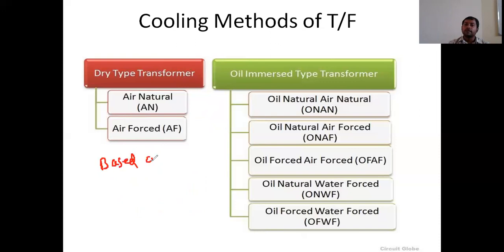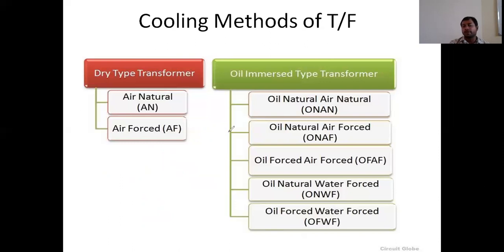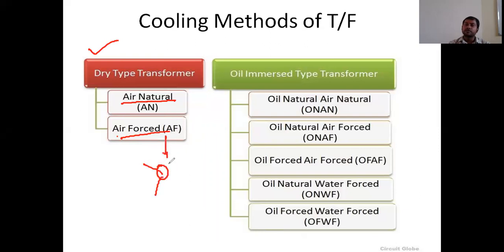Based on the capacity of the transformer — that is, KVA or MVA (kilo volt amps or mega volt amps) — two types of cooling methods are used. One is the dry type transformer cooling system. In this dry type, one method is air natural, where natural air reduces the temperature of the transformer. Another method is air forced, where we need to use separate fans to produce forcible air and reduce the temperature.